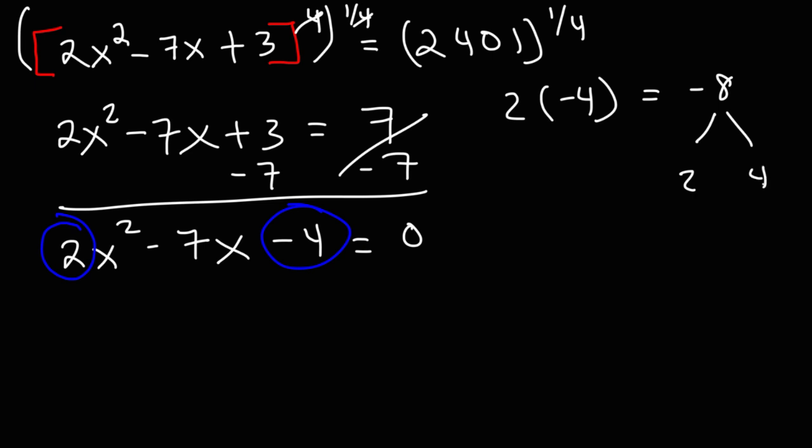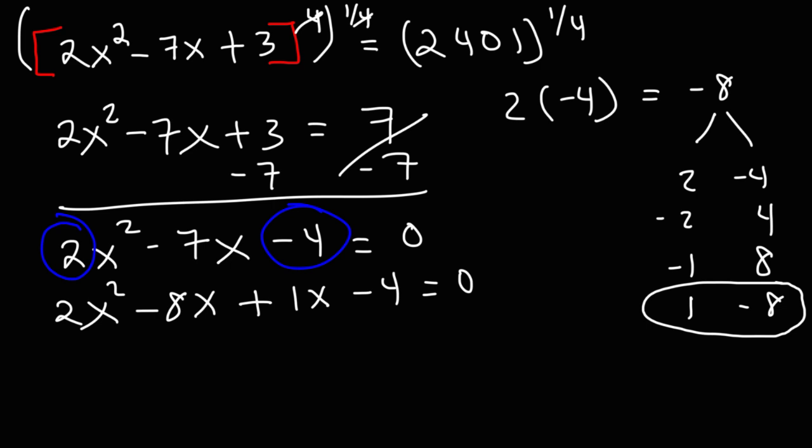So we know that 2 and 4 can multiply to 8. We can use negative 4 or we can use negative 2, but none of these will add up to negative 7. We could try 1 and 8. We can try negative 1 positive 8 or positive 1 negative 8. Now positive 1 and negative 8 adds up to negative 7, so we're going to use that. Let's replace negative 7x with negative 8x and positive 1x.